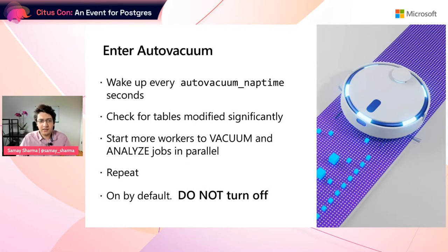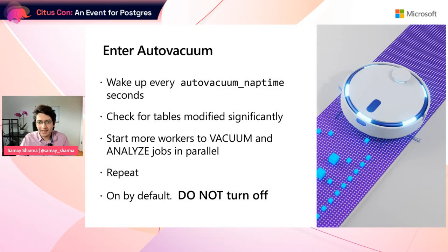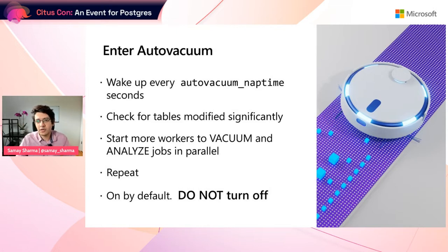Autovacuum is a background process. It wakes up every minute by default — configurable with the autovacuum naptime parameter. It checks which tables need to be vacuumed by looking at how many rows have changed, then decides whether to trigger vacuum or analyze for those tables. It does both vacuum and analyze, though in this talk we'll focus specifically on vacuum. Autovacuum is on by default and for good reason. There is very rarely a good reason to turn it off, so please don't unless you really know what you're doing.